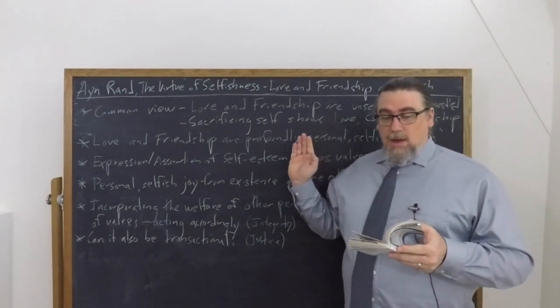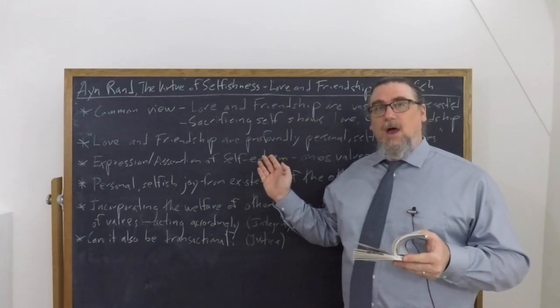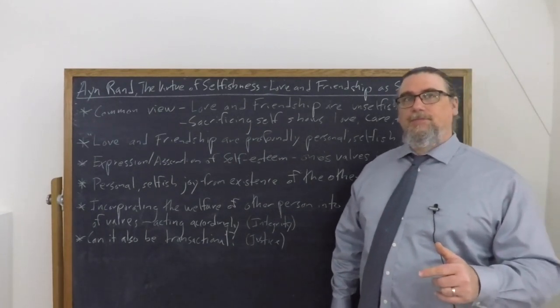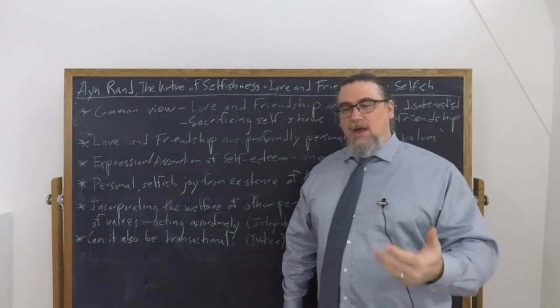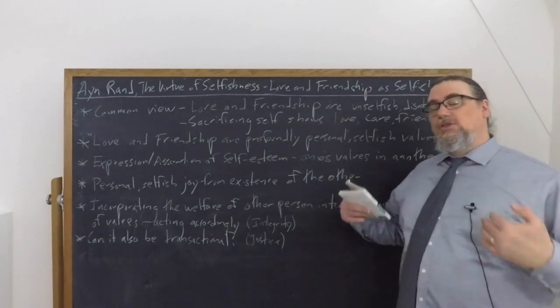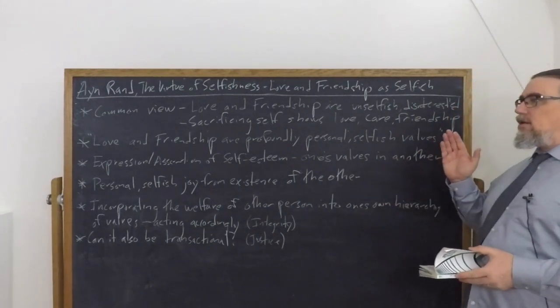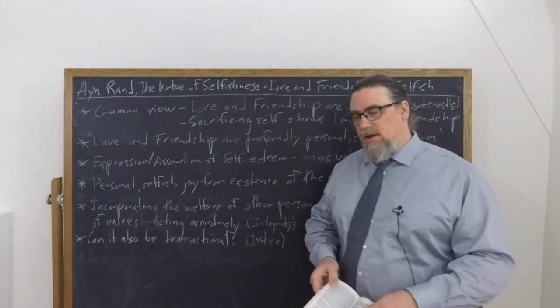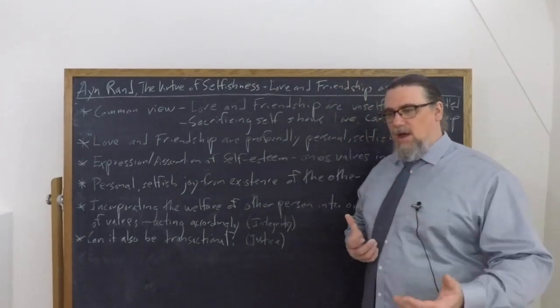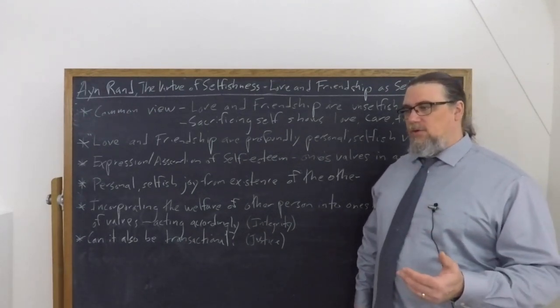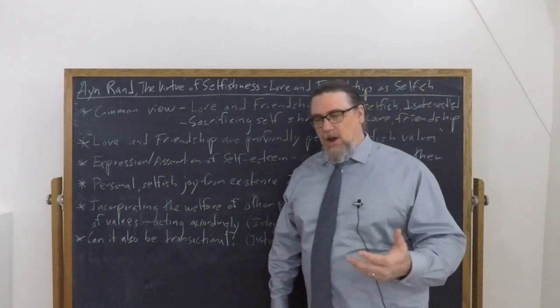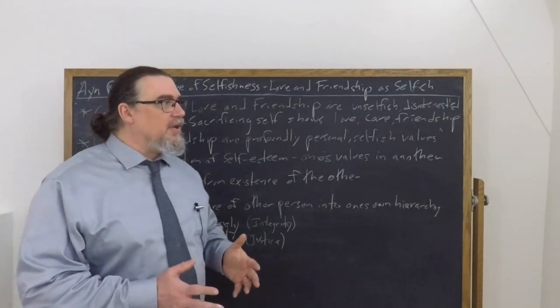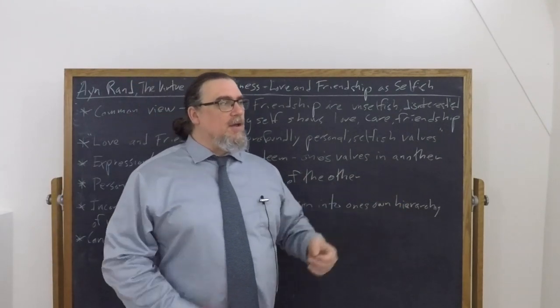So she says love is an expression and assertion of self-esteem. Self-esteem, it's important to keep in mind for Rand is a value and it leads to the virtue of pride. It's a capacity to value oneself properly. So an expression or assertion of one's own self-esteem, one's own self-valuing, and you see those same values in another. A response, she says, to one's own values in the person of another. So this implies that in order for you to feel love or friendship to another person, you have to see at least the potential of the same values, the same shared, as she's calling it, hierarchy of values, the way in which we order and prioritize things in our lives in the other person. And without this, I mean we could have an attractiveness to the other person, we could think that they're different than they are.